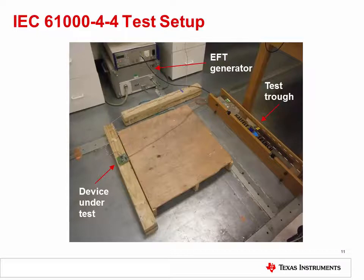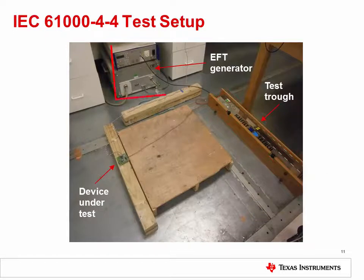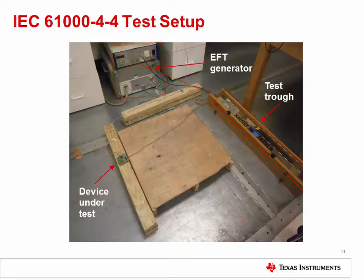During the EFT test, the device under test is connected to its power supply with three meters of cable and placed on a small wooden platform. Part of the cable passes through a special trough with wooden side panels and a triangular metallic inner chamber. The EFT generator is connected to the metallic chamber of the trough, and the test waveform is applied. The EFT waveform can then couple to the device under test's power supply cable.